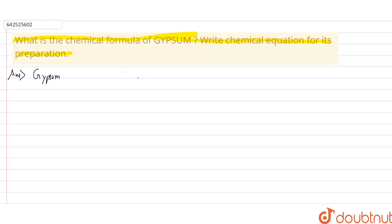The chemical formula of gypsum is CaSO₄·2H₂O. Secondly, we have been asked to write the chemical equation for its preparation, so the chemical equations of its preparation are as follows.